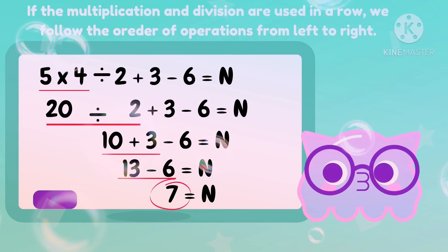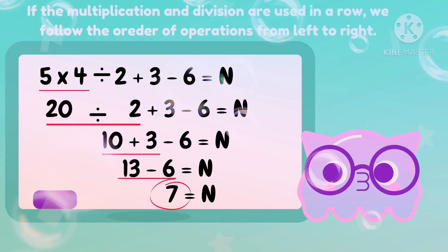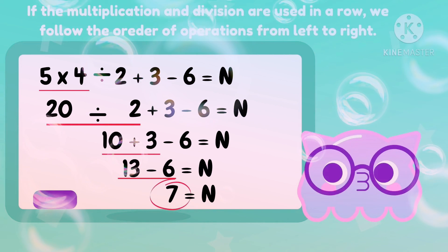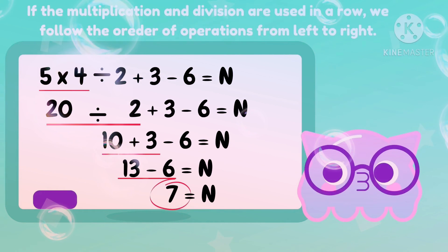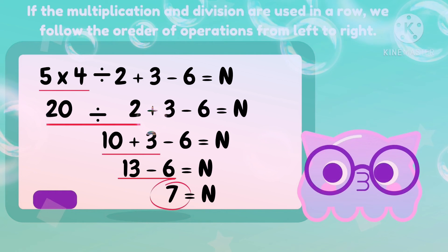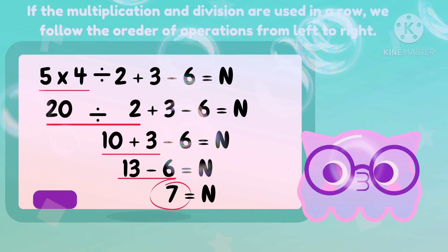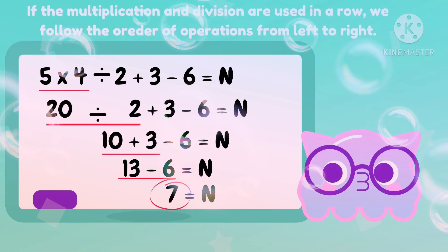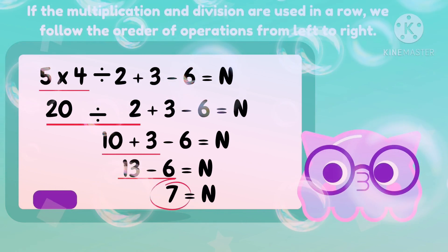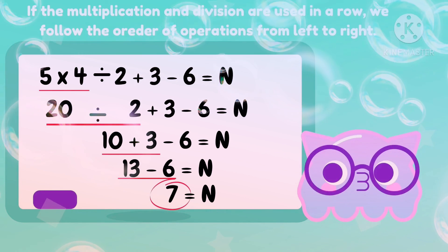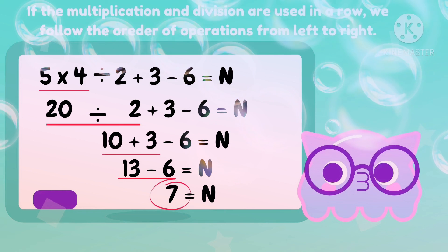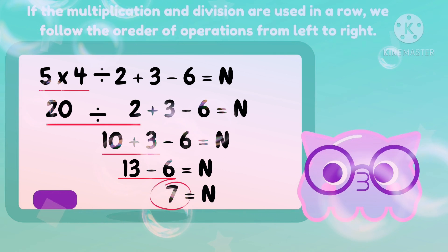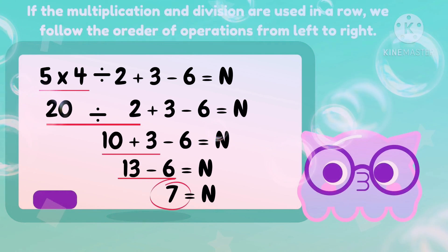Let's review what we did. We multiplied first: 5 times 4 is 20, divided by 2 plus 3 minus 6 equals N. Then we proceeded with division: 20 divided by 2 is 10, plus 3 minus 6 equals N. Since addition comes first, we add: 10 plus 3 is 13, then 13 minus 6 equals 7.